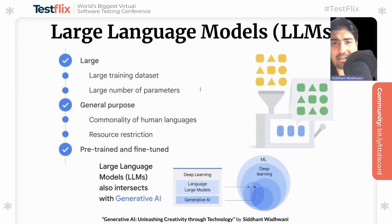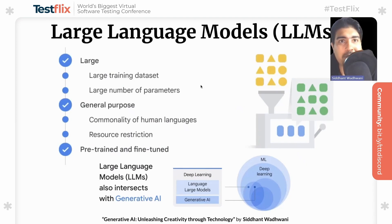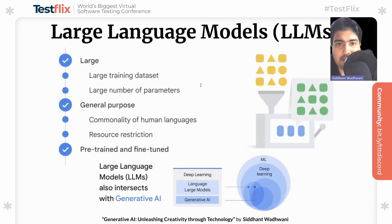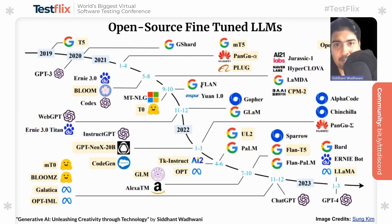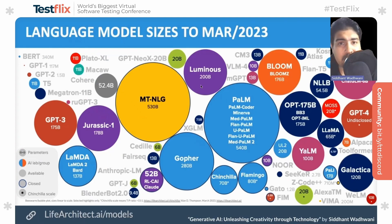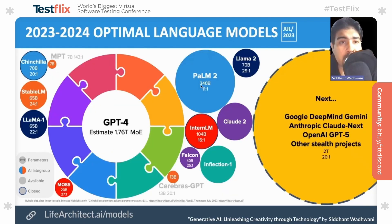Large language models are a type of artificial intelligence that uses deep learning techniques to understand and generate human-like text. These models are trained on massive datasets containing text from the internet, books, articles, and more, and have become increasingly powerful due to their size and the sheer amount of training data. LLMs have two primary functions: understanding text and generating text. Examples include GPT-3, BERT, BART, T5, XLNet, and various others. The sizes of these LLMs range from 100 million-plus to 540 billion parameters as of March 2023, and with GPT-4, Google's Gemini, and other recent models, their sizes could be nearly 2 trillion.